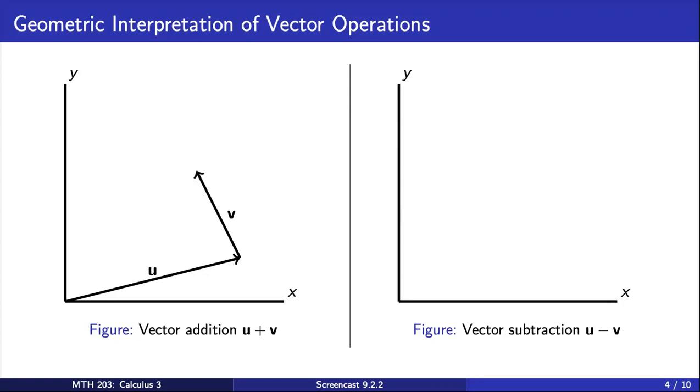Remember that the position of a vector doesn't matter, so we may picture this by placing the tail of v at the tip of u, as we have in this picture. We can then visualize the vector u plus v in standard position.